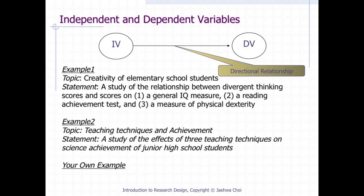As discussed earlier, Example 1 type research statements are correlational, and Example 2 type are causal. In a causal research scenario, you can characterize independent and dependent variables. An independent variable is a variable that works as a cause — the arrow comes out of that variable. A dependent variable is a variable that works as an effect — the arrow comes into that variable. Please develop your own causal research statement and identify which variable is independent and which is dependent.